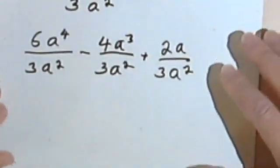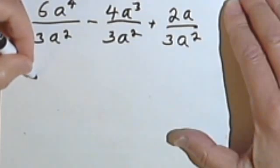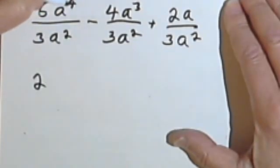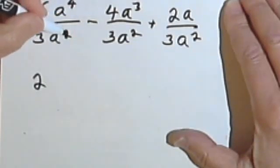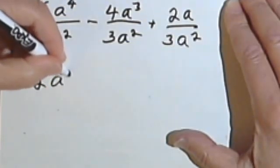So now it's just a matter of simplifying each of the three fractions. 6 divided by 3 is 2. a⁴ over a², subtracting this 2 from this 4, I get a 2. So that's going to be 2a².